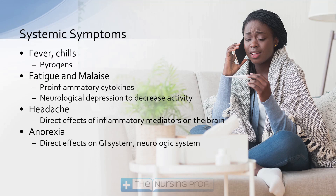We can also get systemic symptoms as a result of inflammation. Fever and chills are caused by pyrogens — the body is trying to increase temperature so that it will not be a good environment for bacteria and viruses to live in. Fatigue and malaise are caused by pro-inflammatory cytokines, along with some neurologic depression due to decreased activity, as the body moves energy toward healing. Headache occurs because inflammatory mediators circulating in the bloodstream cause irritation and inflammation in the brain, and the same happens with the GI system.